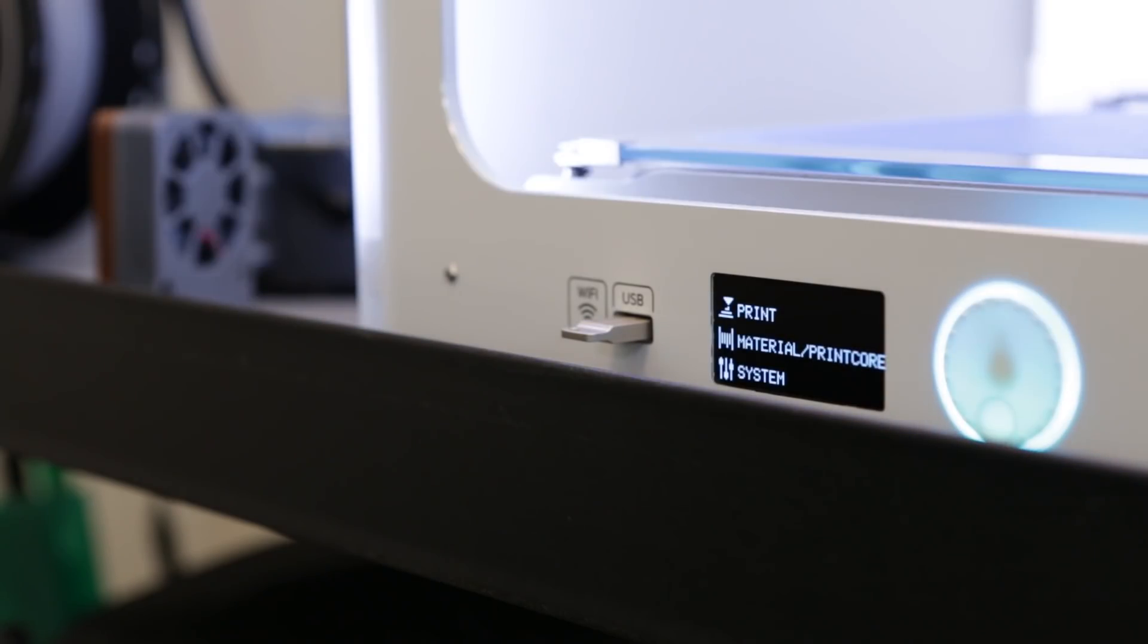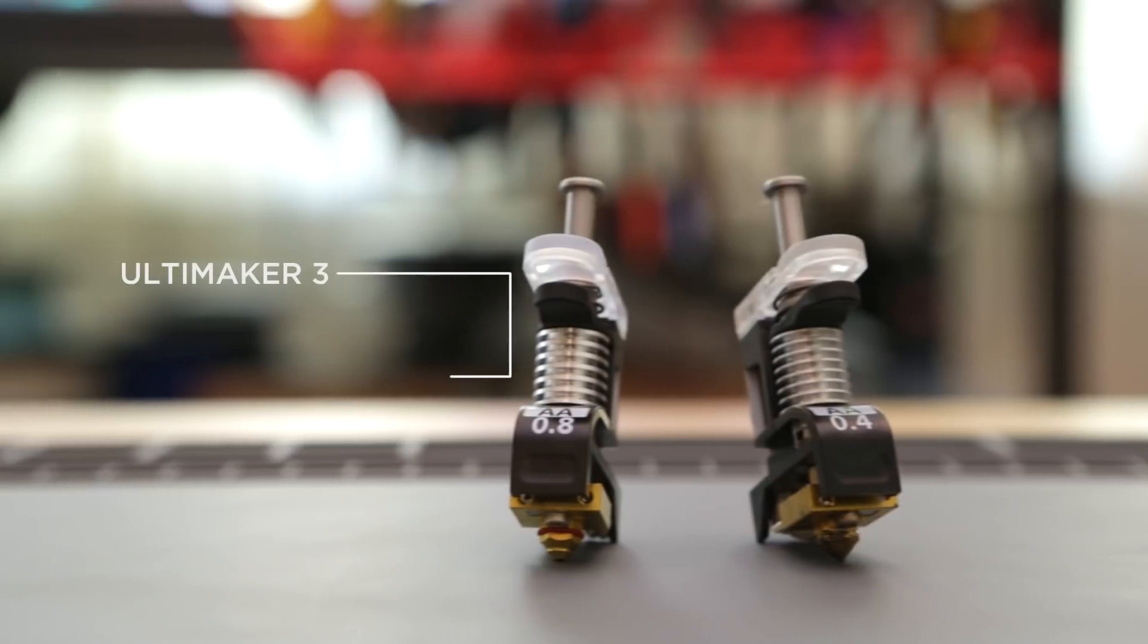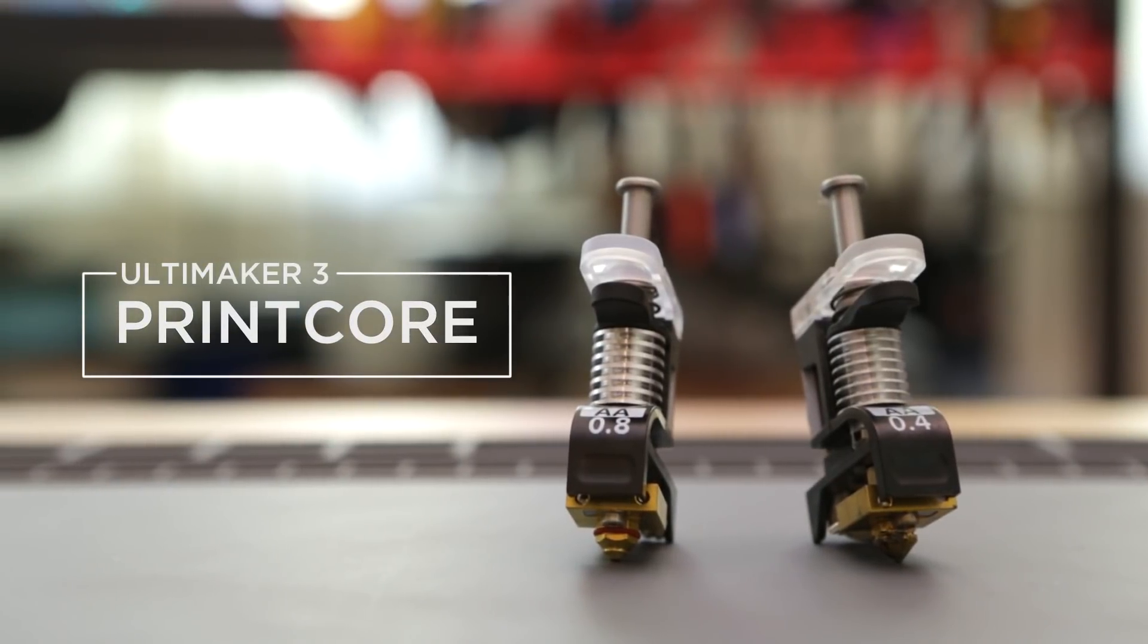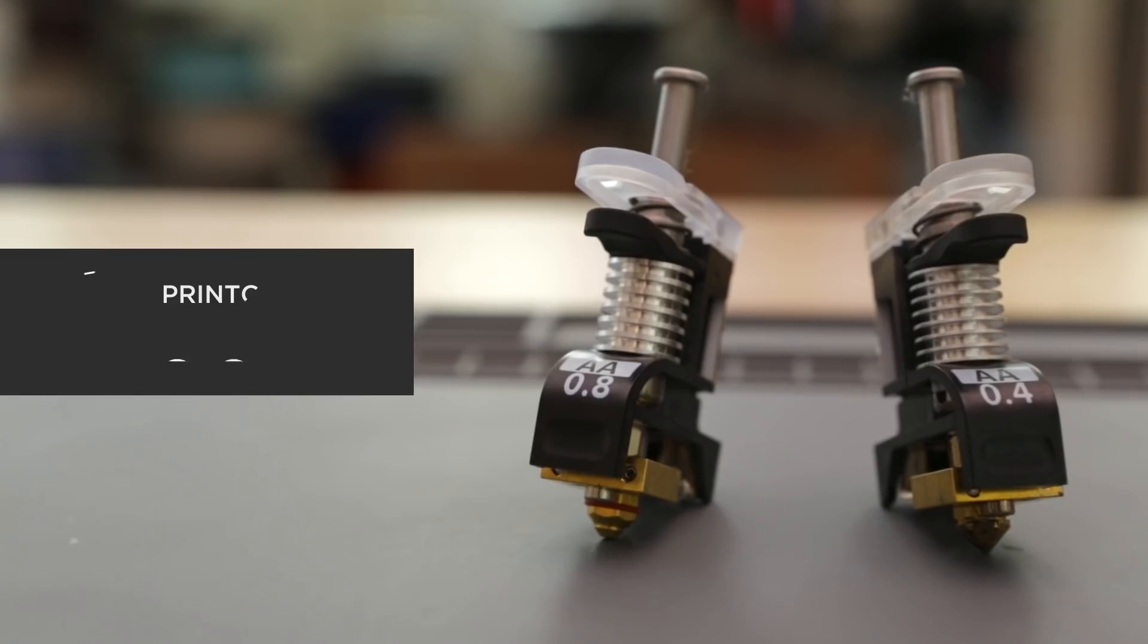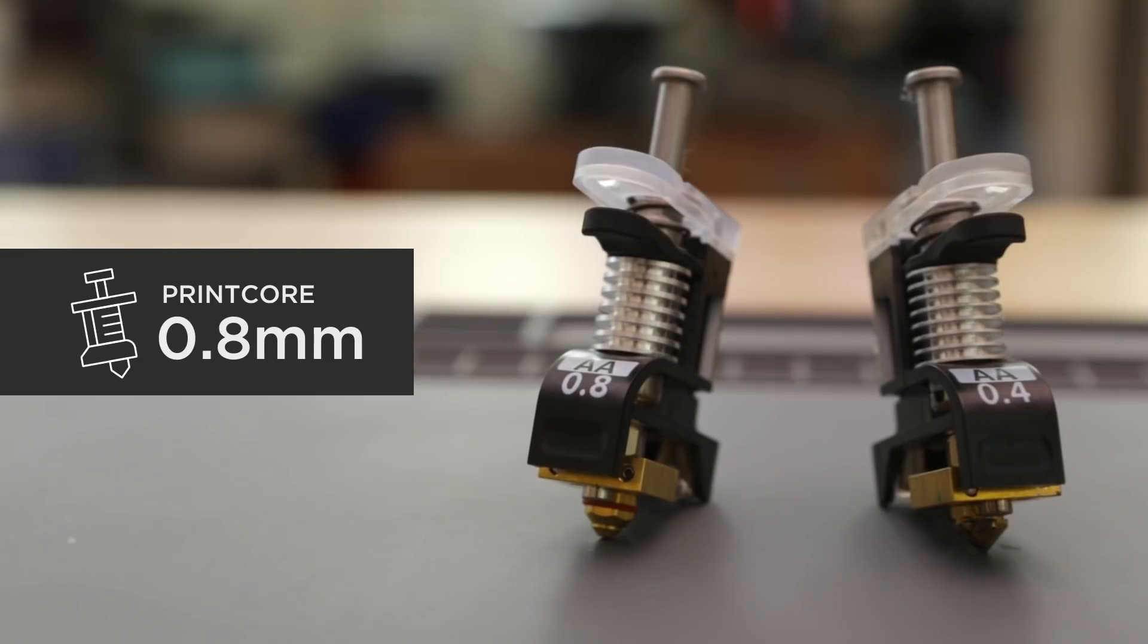To 3D print the part, we used a 0.8mm nozzle which allows for printing a bigger layer height and extrusion width. This uses more material and actually reduces the total print time.